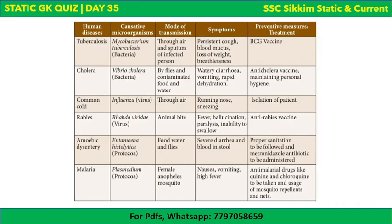Here we can see a disease table: tuberculosis is caused by Mycobacterium; cholera by bacteria; common cold and influenza by virus; rabies by virus; dysentery by protozoa; and malaria — importantly — is also caused by protozoa. Modes of transmission, symptoms, and preventive measures are also listed. You can pause the video or get it in the PDF.